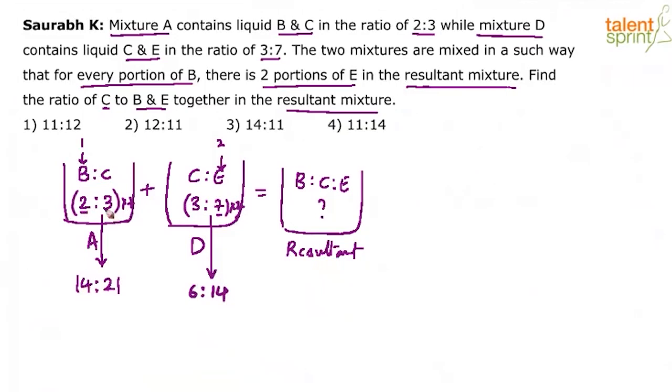So, 2 into 7, 14 by which 3 into 7 becomes 21 and here we want 7 into 2, 14. So 3 into 2 becomes 6. So these are the ratios. Basically, ratios have not changed. We are just multiplying both the terms by a common value. 2 is to 3 is as good as 14 is to 21. 3 is to 7 is as good as 6 is to 14.